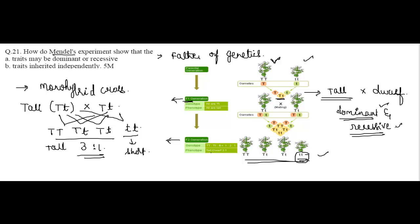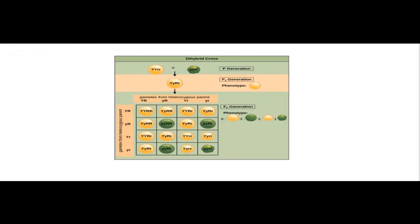The second question concerns traits inherited independently. For this experiment, Mendel conducted a dihybrid cross. A monohybrid cross is a cross between two plants with one pair of contrasting characters, while a dihybrid cross involves two pairs of contrasting characters.